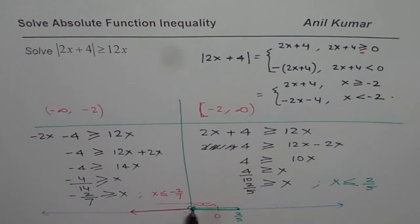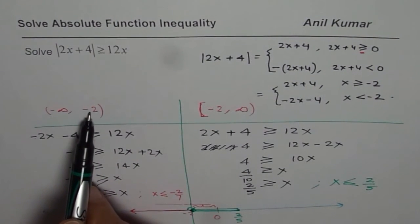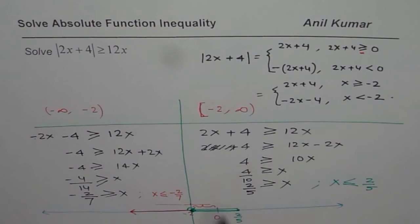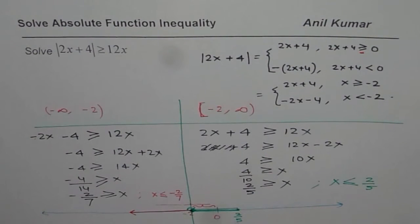Earlier minus 2 was not included, but this time minus 2 is included, because we are not including minus 2 on the left. So what do you see from here is that the solution for us is everything less than or equals to 2 over 5 will satisfy this particular inequality. And now we can write down our answer.